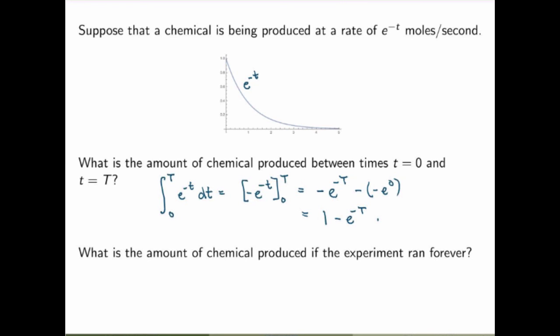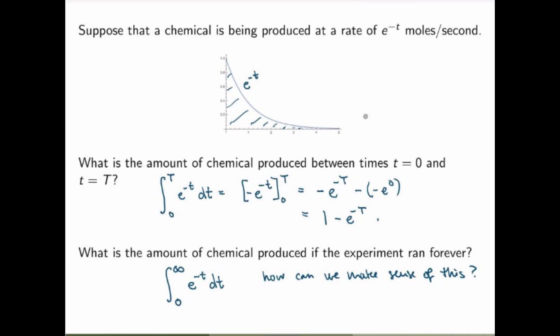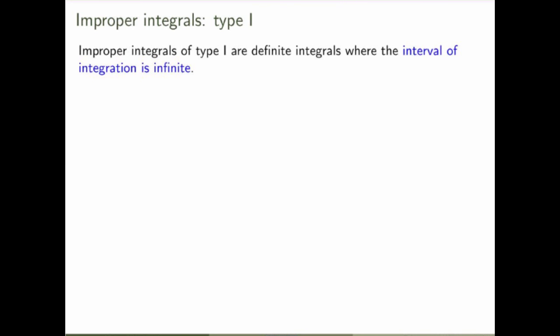But if I ask you: what is the amount of chemical produced if the experiment runs forever? You may be tempted to say it's infinite, but that's not so obvious. Mathematically, we'd write this as an integral from t equals zero to t equals infinity of e to the minus t dt. So somehow this is what we want to calculate. This is exactly what an improper integral of the first type is — definite integrals where the interval of integration is infinite.